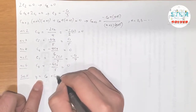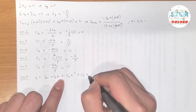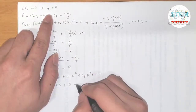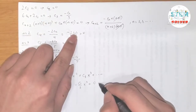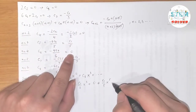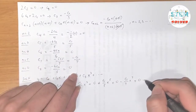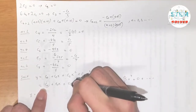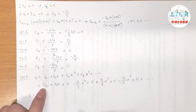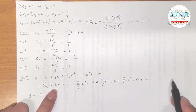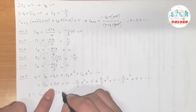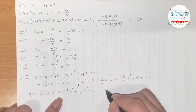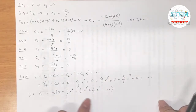Writing out the solution: y = c₀ + c₁x + 0·x² + (−c₁/3)x³ + 0·x⁴ + (c₁/5)x⁵ + 0·x⁶ + (−c₁/7)x⁷ + … Factoring out c₀ and c₁: y = c₀·(1) + c₁·(x − x³/3 + x⁵/5 − x⁷/7 + …). Typically this is your final solution, but since we have an initial value problem, we need to solve for c₀ and c₁.